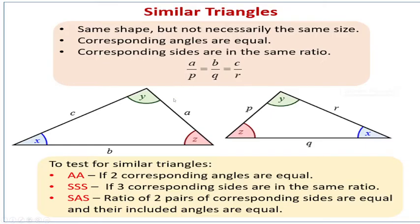The first test is called AA. If two corresponding angles are equal, then two corresponding angles are equal. The next step is if three corresponding sides are in the same ratio.